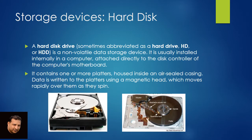First is Hard Disk. A Hard Disk or Hard Disk Drive is a non-volatile data storage device — it means whenever power is removed, data will not be erased. It is usually installed inside a CPU, attached directly to the disk controller of your computer's motherboard. It contains one or more platters housed inside an airtight casing. Data is read or written to the platters using a magnetic head which moves rapidly over them as they spin.